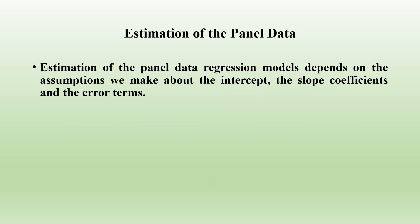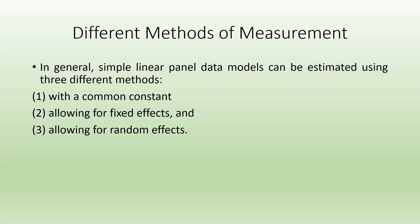The estimation of the panel data regression model depends on the assumptions we make about the intercept, the slope coefficients and the error terms. In general, simple linear panel data models can be estimated using three different methods: 1. Common constant, 2. Allowing for fixed effects, 3. Allowing for random effects.